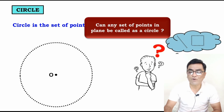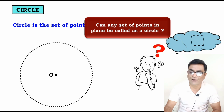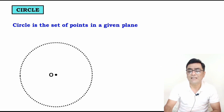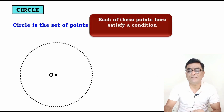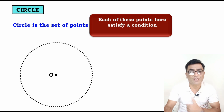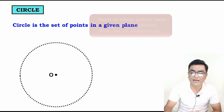Can any set of points in a plane be called a circle? No, the answer is no. Because each of these points must satisfy a condition — the same condition for all of them. What condition is that?